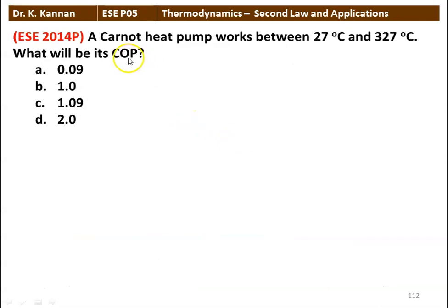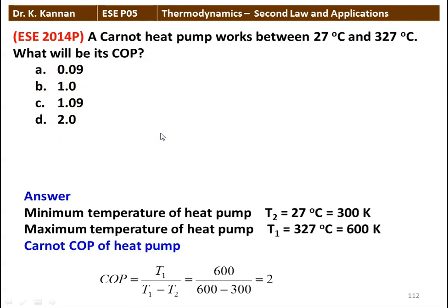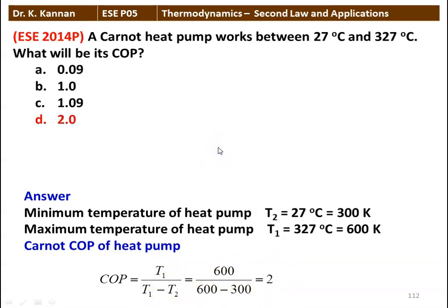Next question: a Carnot heat pump works between 27°C and 327°C. What will be its COP? Options: 0.9, 1.0, 1.09, or 2.0. Answer: T2 = 27°C = 300 K, T1 = 327°C = 600 K. COP of heat pump = T1/(T1−T2) = 600/(600−300) = 2. The answer is 2.